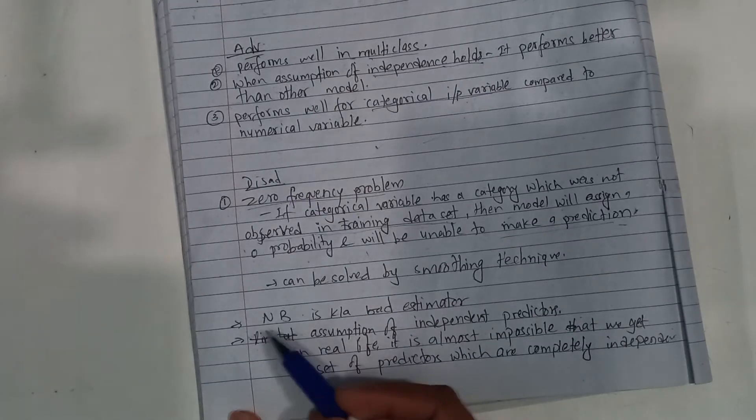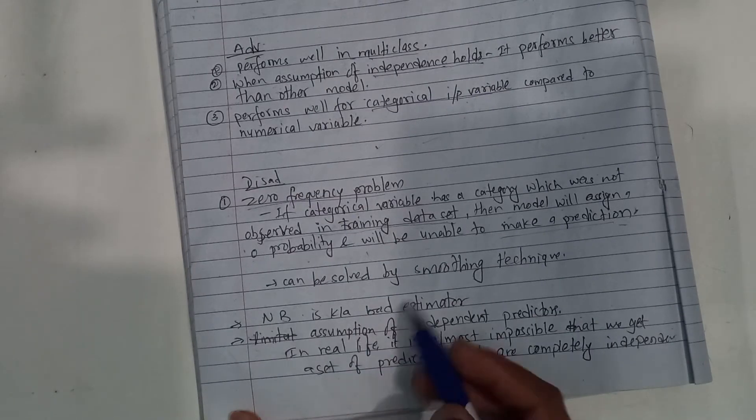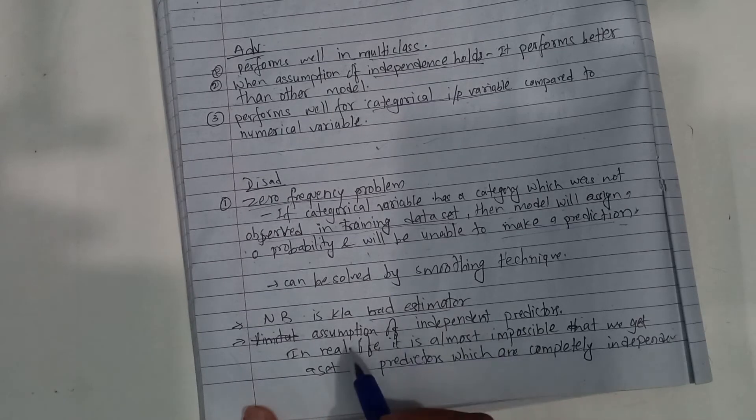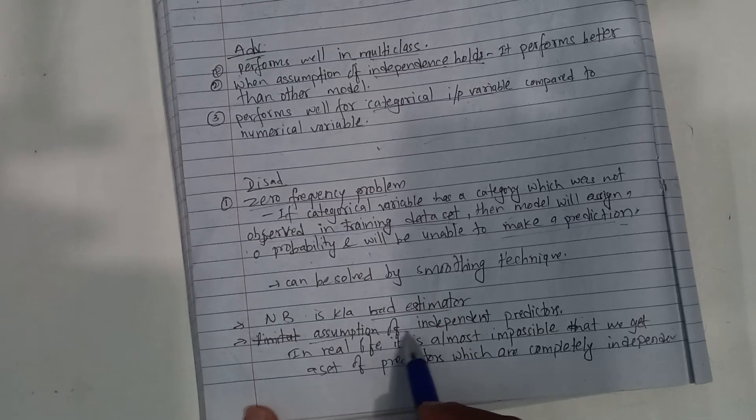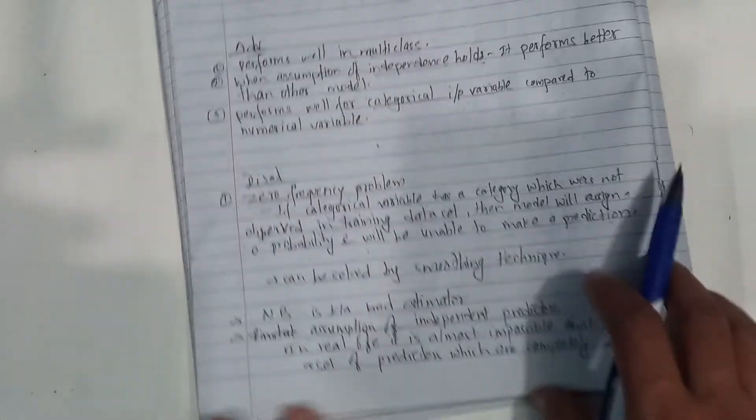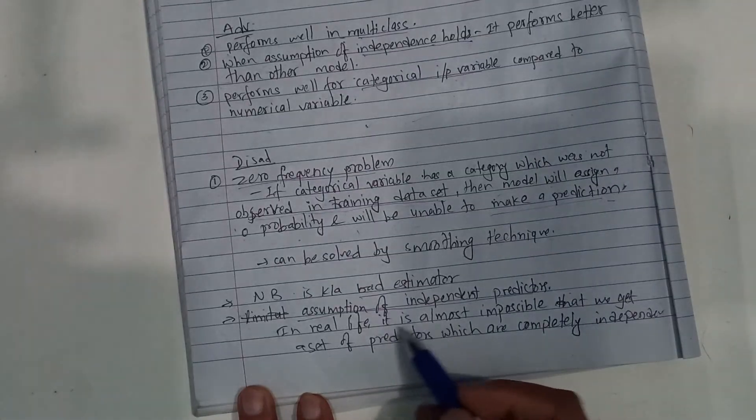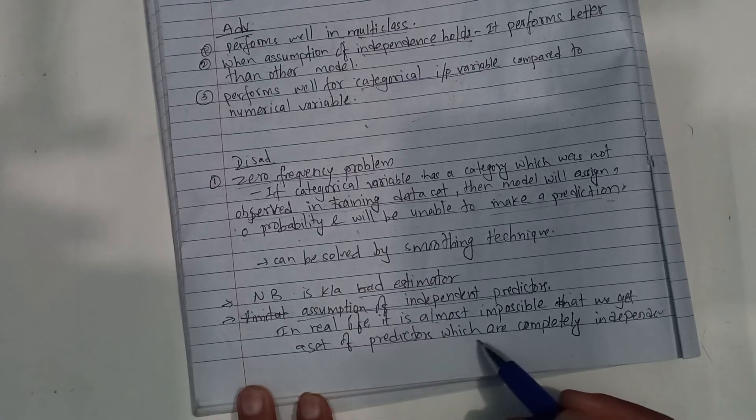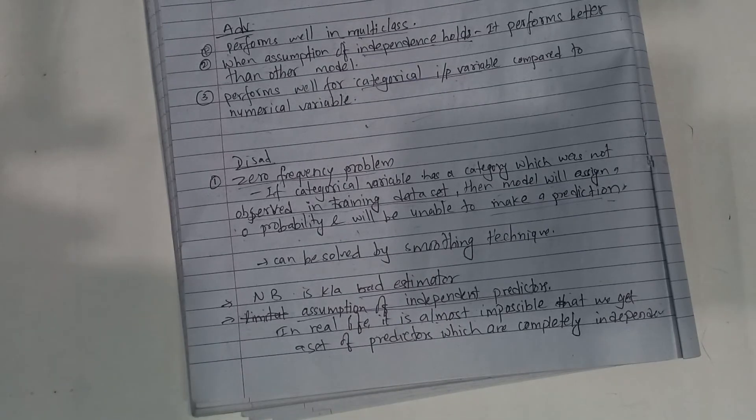This classification is known as a bad estimator because the assumption of independent predictors is, in real life, almost impossible. We cannot get a set of predictors which are completely independent.